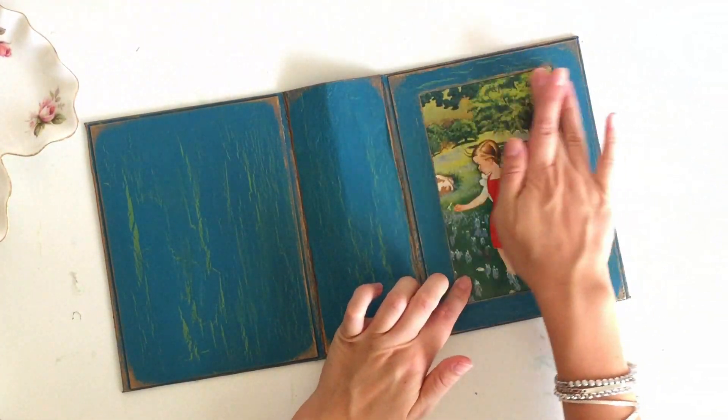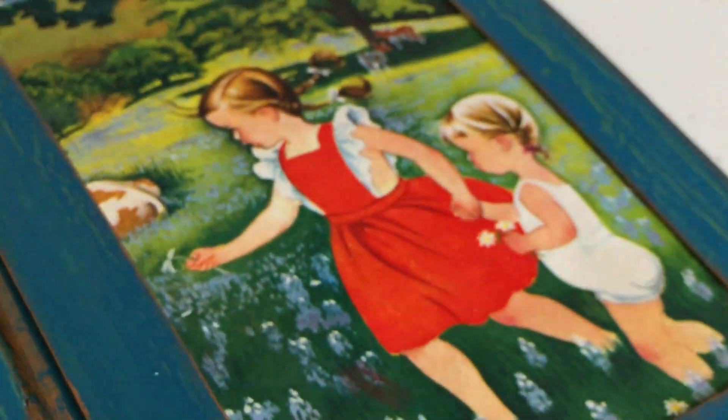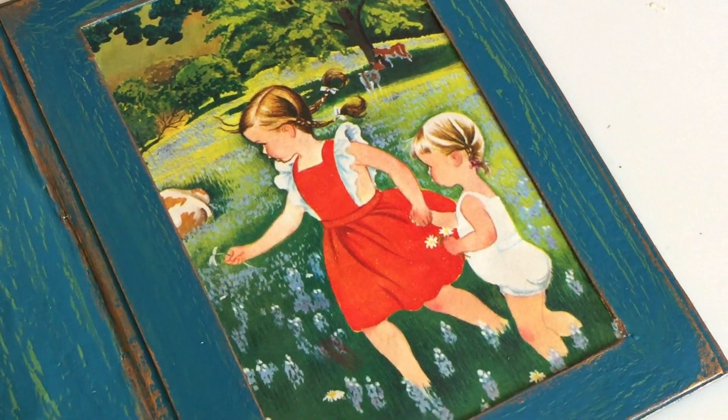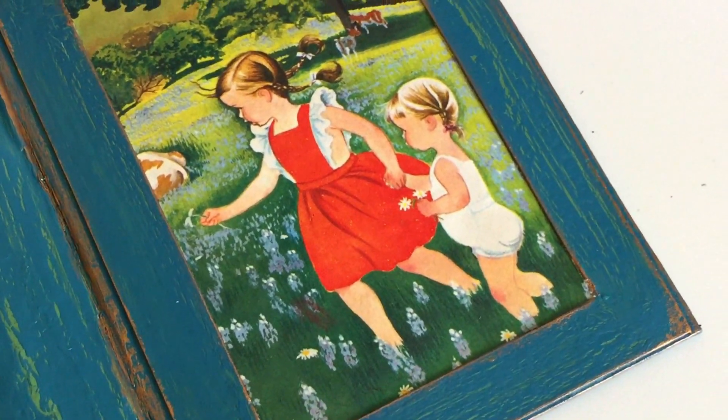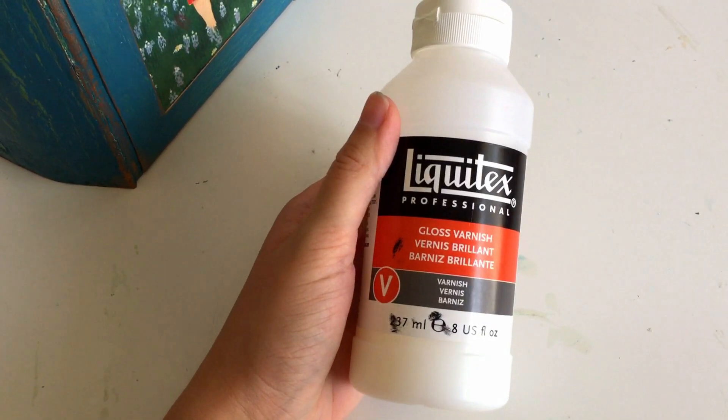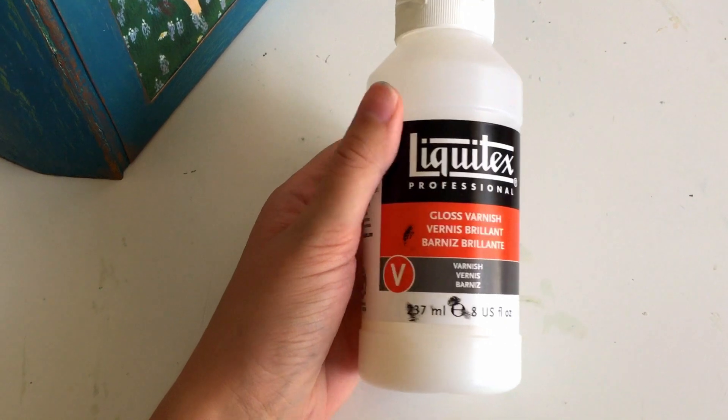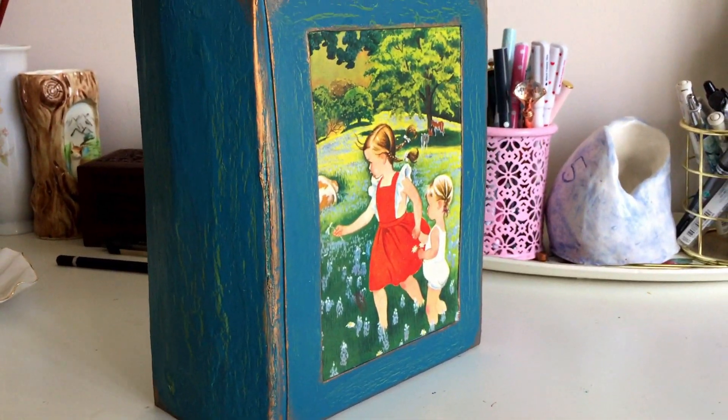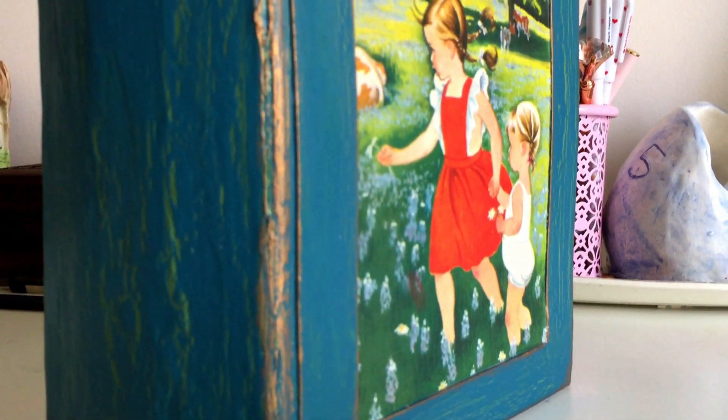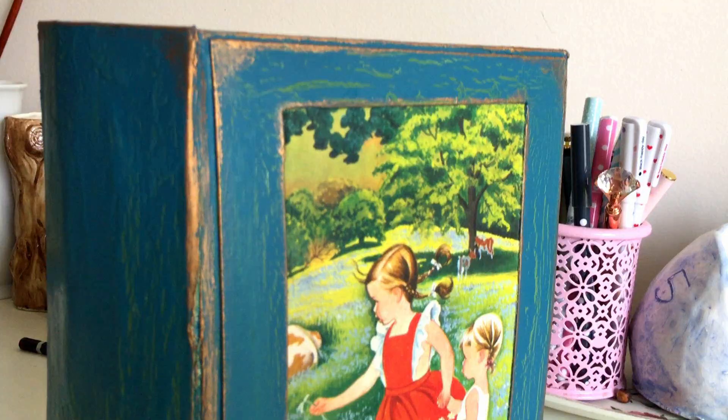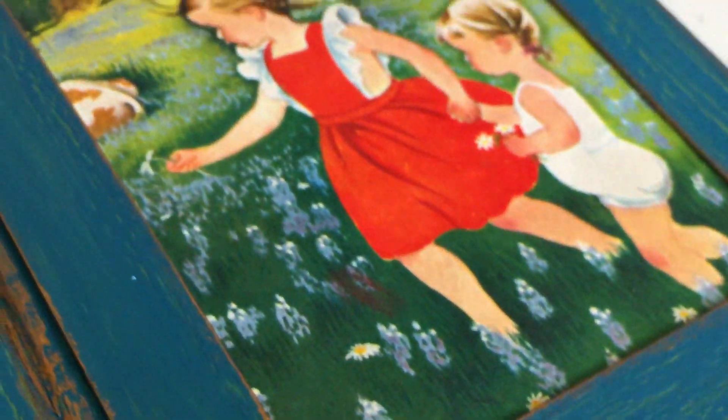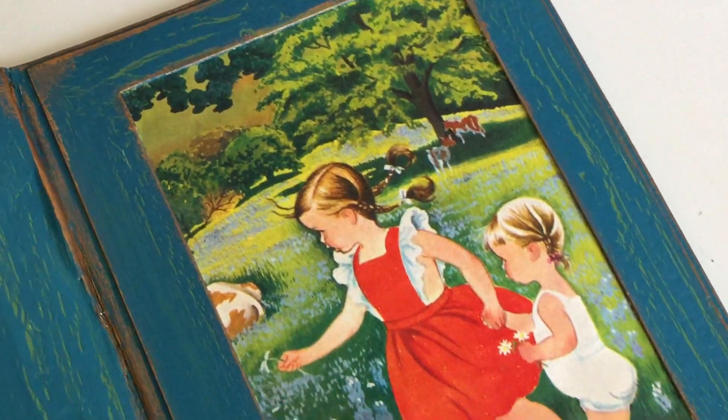Once everything is dry, I like to apply Liquitex varnish over the whole cover. You can use any varnish that you like but it is important to seal everything in, especially when you're using paints and mixed media. I didn't apply the varnish yet as I do want to add some more details to my journal but I haven't figured out what just yet. So those are the basic steps to creating window cover journals. I hope you guys enjoyed this tutorial. You can let me know in the comments if you have any others that you would like me to cover and I will see you in my next video. Bye!